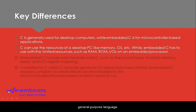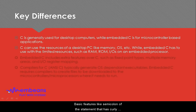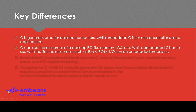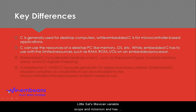C is a general purpose language with basic features like semicolons as statement terminators and curly braces for grouping blocks of statements. It has facilities for structured programming, provides constructs that map efficiently to typical machine instructions, and allows lexical variable scope and recursion. It also has a static type system which prevents many unintended operations.